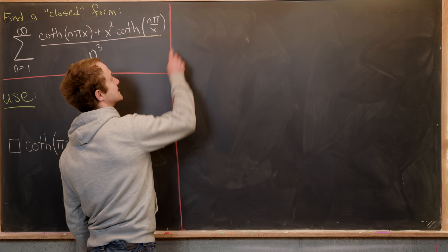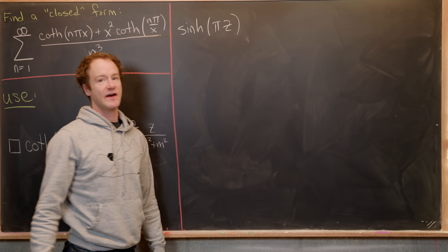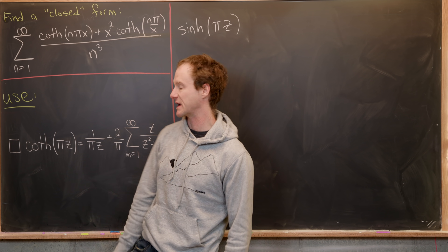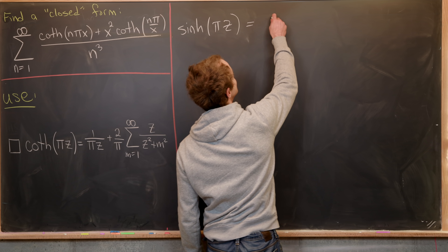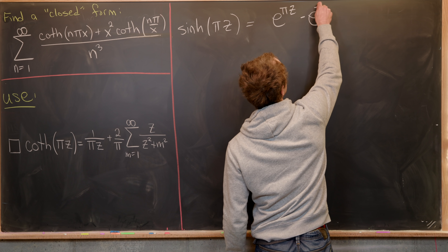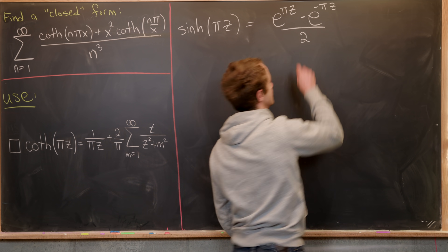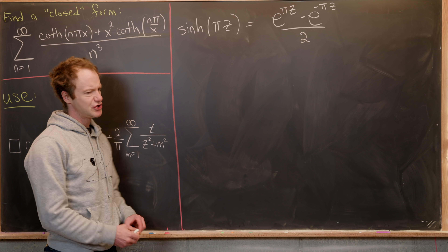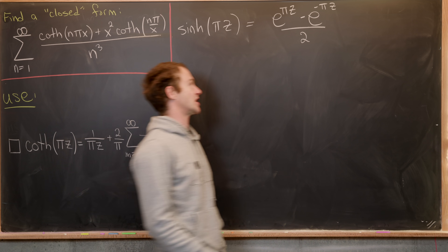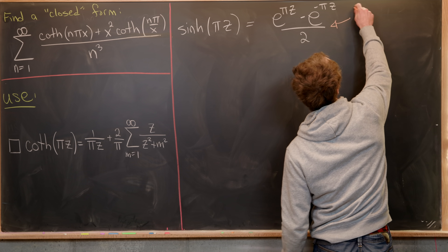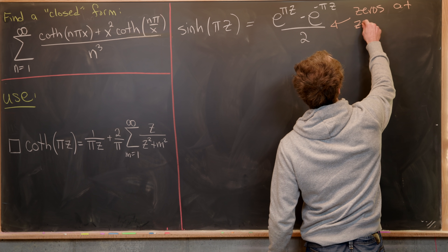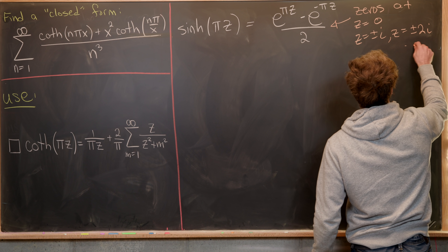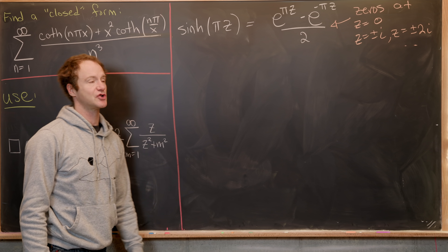We're first going to start with the hyperbolic sine. Its definition in terms of exponential functions — with a pi in the argument to match what we need — is: sinh(pi*z) equals e to the pi*z minus e to the minus pi*z, over 2. This function has zeros at z equals 0, z equals plus or minus i, z equals plus or minus 2i, and so on — all integer multiples of i.